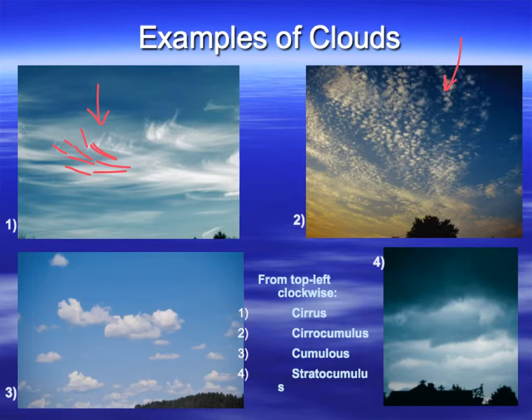The second example shows individual little cottony balls that are very spread out and very small, meaning they're thin and high — this would actually be a cirrocumulus combination.